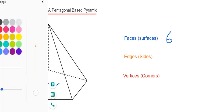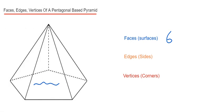Let's do the edges next. The edges are the sides which make the pyramid. To do this you can count the lines. So we've got one, two, three, four, five, six, seven, eight, nine, ten. So we have ten edges.